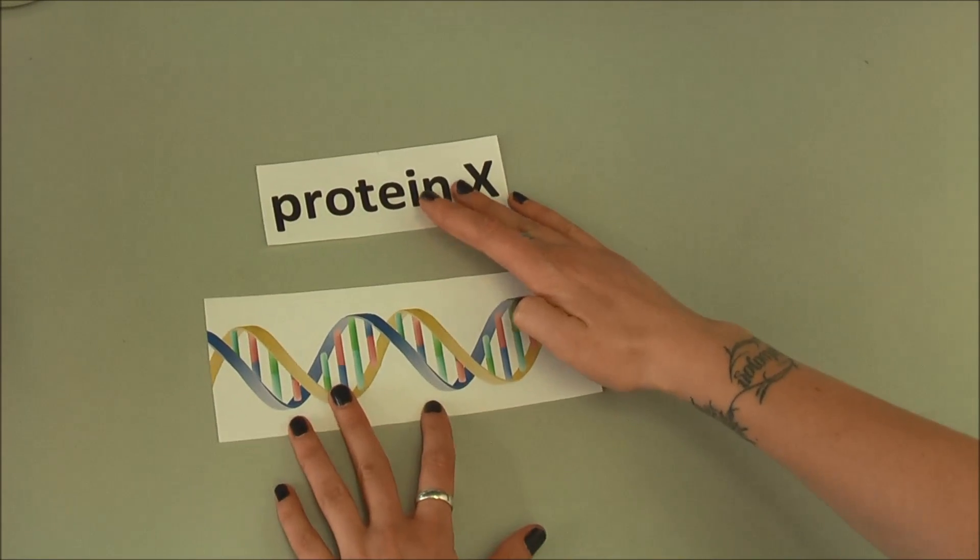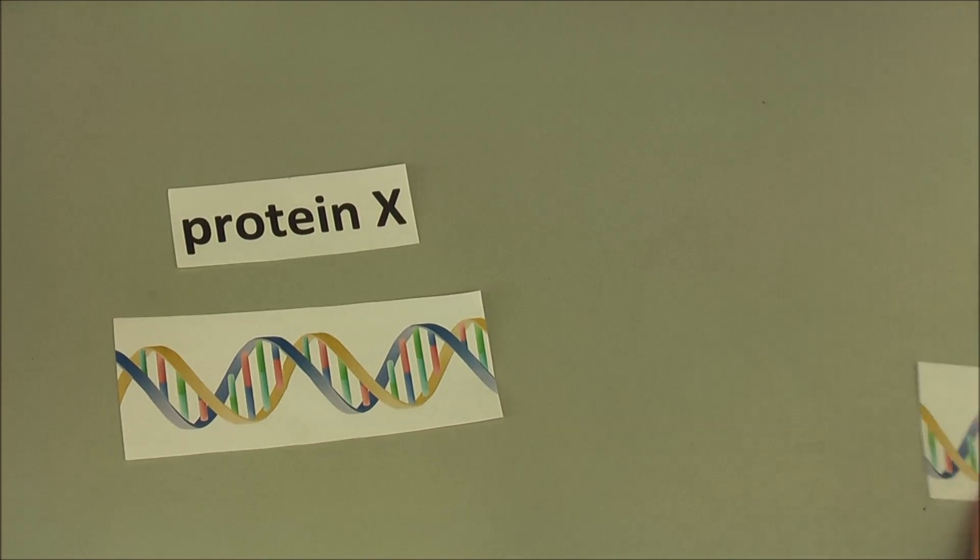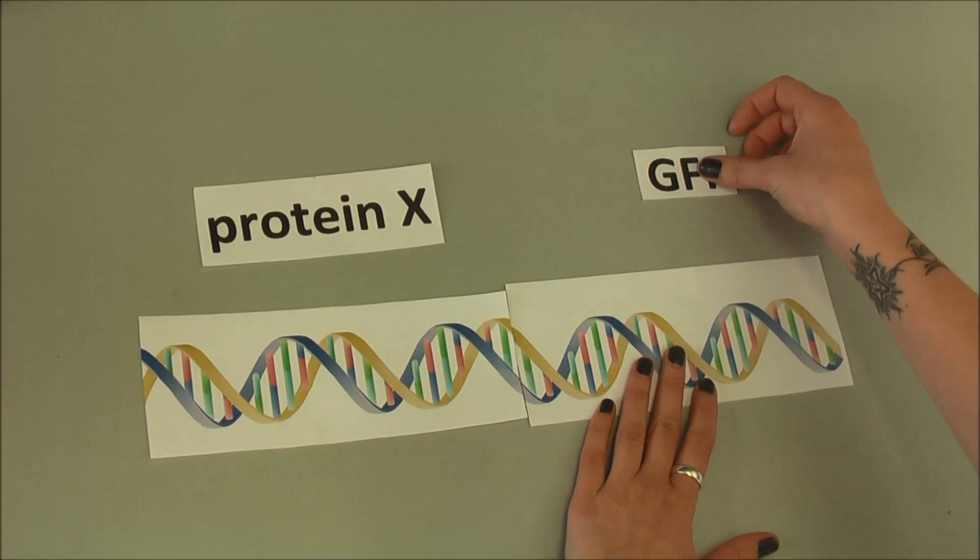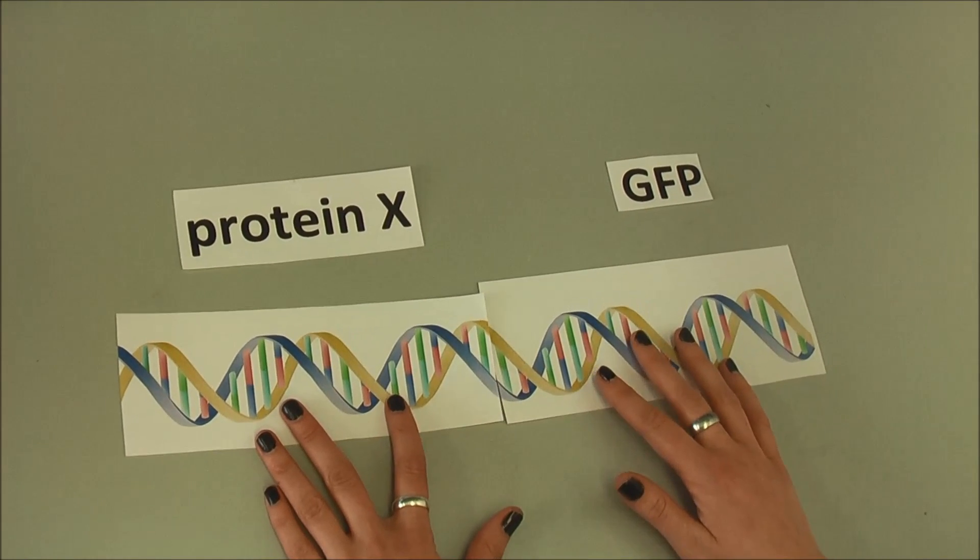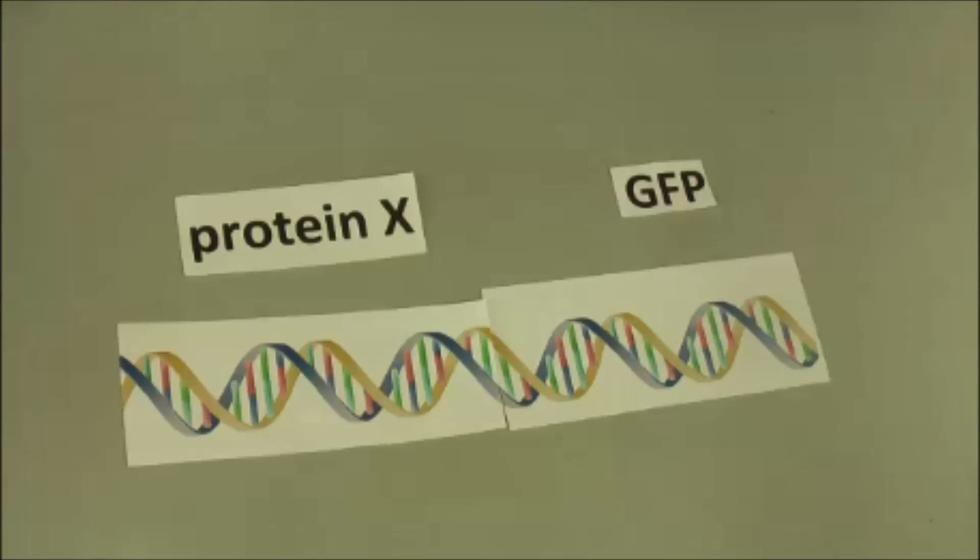The composition of proteins is encoded in the DNA, the hereditary material in organisms. This code for GFP is known so that it can be used to add it to the code of the protein that we want to analyze.